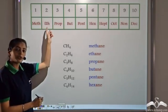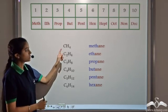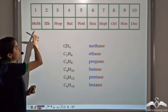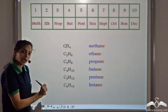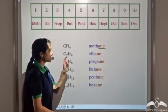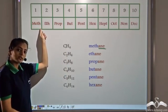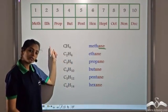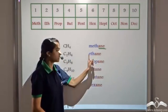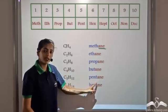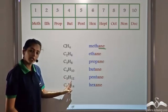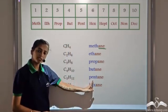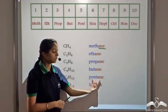The number of carbon atoms gives the name to the organic compound. One carbon atom means 'meth', and since it is an alkane, we add the suffix '-ane', giving methane. Two carbon atoms gives ethane. For example, C5H12 has five carbon atoms, so 'pent' plus '-ane' gives pentane.